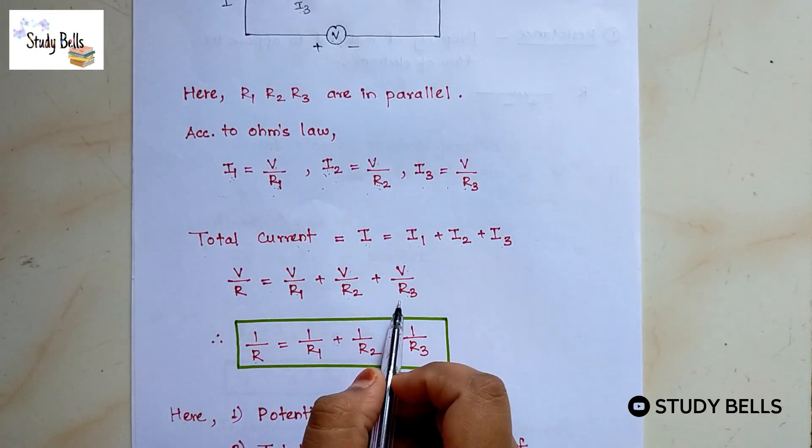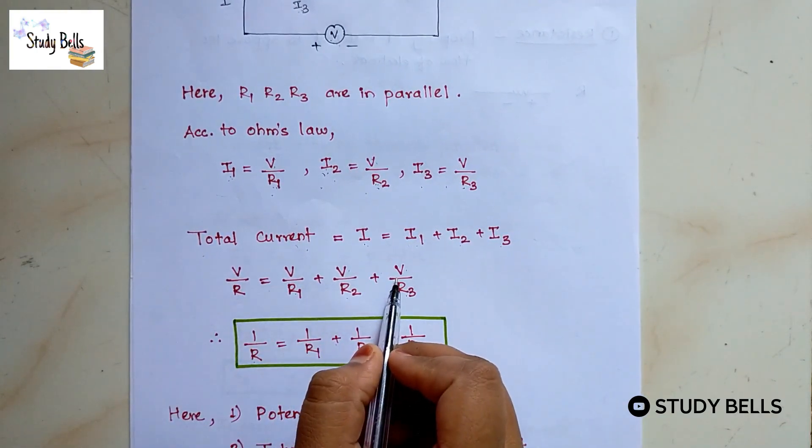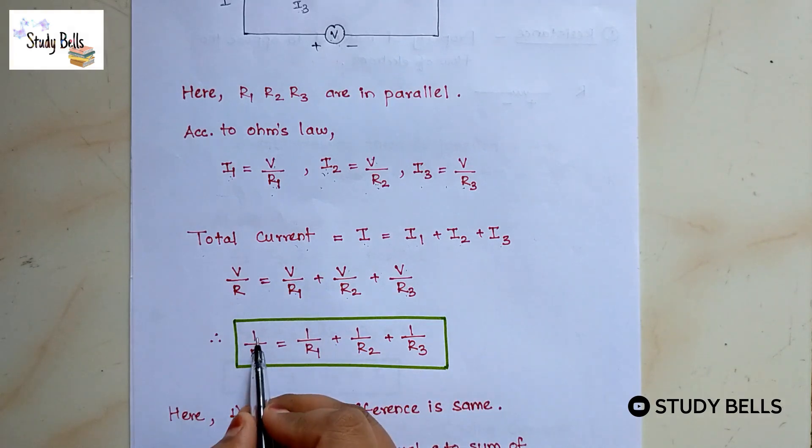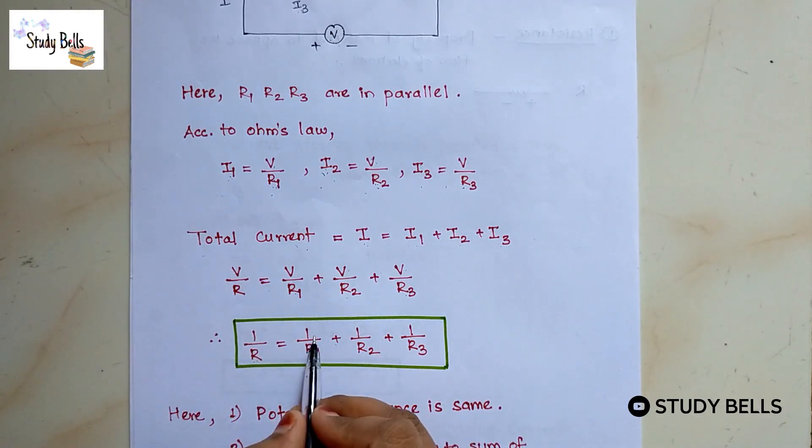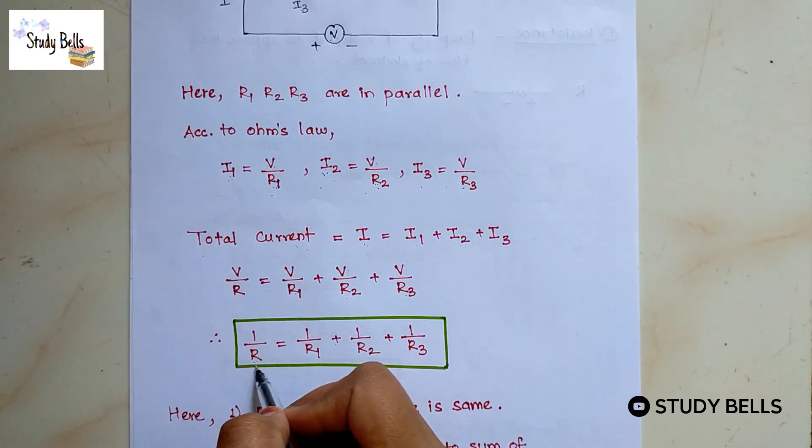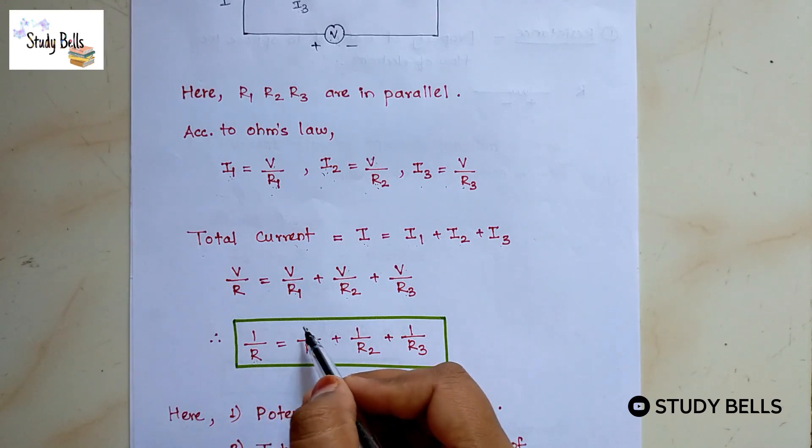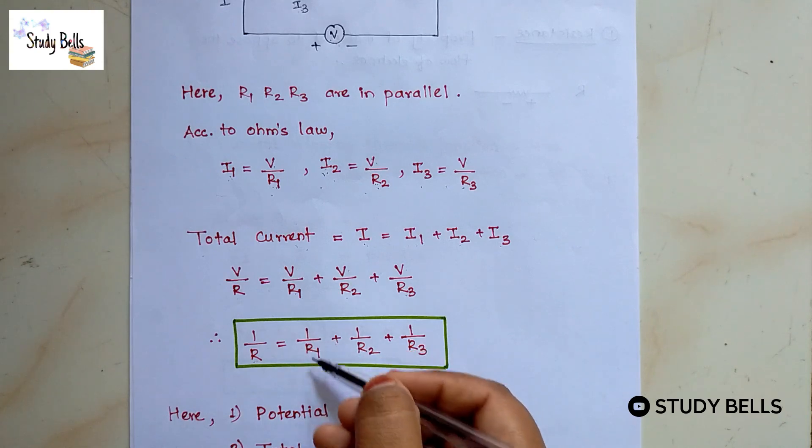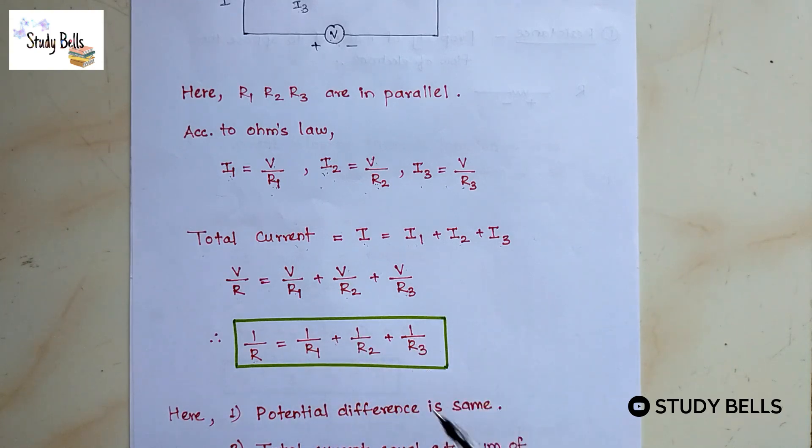When we put the values voltage is same then it can be removed. So 1 by R equals 1 by R1 plus 1 by R2 plus 1 by R3. We can conclude here that inverse of equivalent resistance is equal to sum of inverse of each individual resistance.